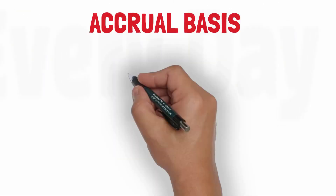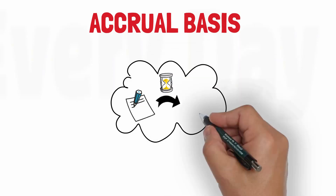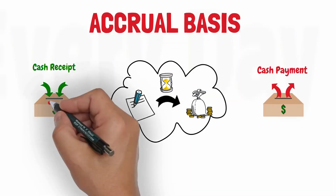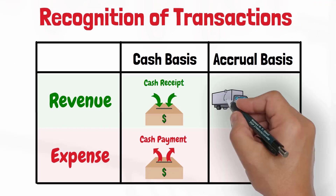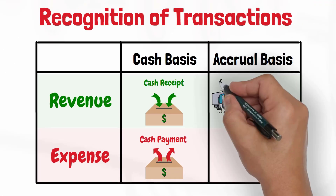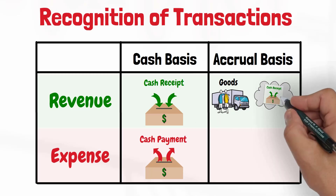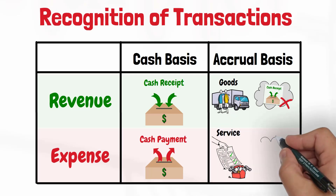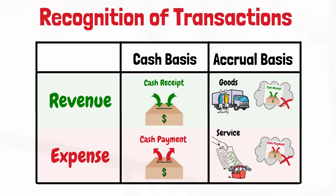On the other hand, the accrual basis of accounting recognizes transactions when they occur, regardless of when the cash is received or paid out. Revenue is recognized when the goods or services are provided to a customer, even if cash has not been received from the customer yet. The expense is recognized when it is incurred, even if cash has not been paid yet.